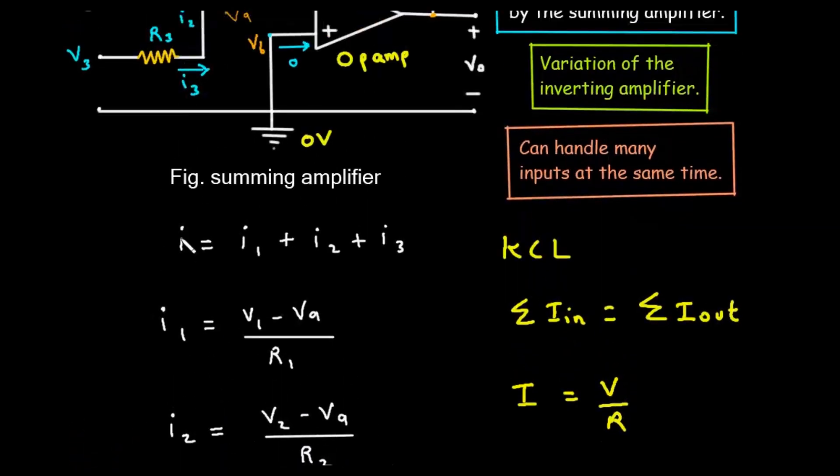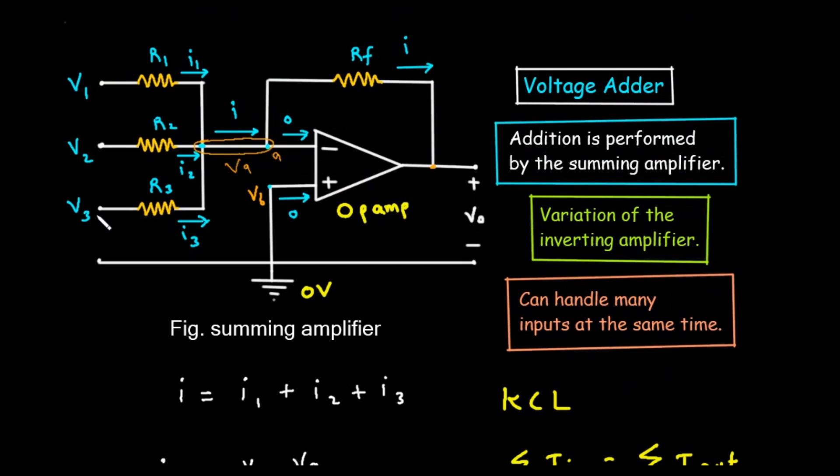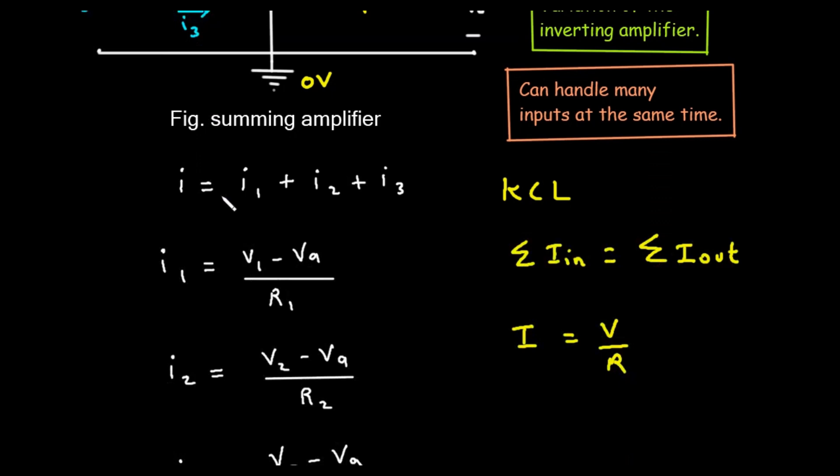Similarly, for current I3 through resistor R3, I3 equals (V3 minus Vi) divided by R3.